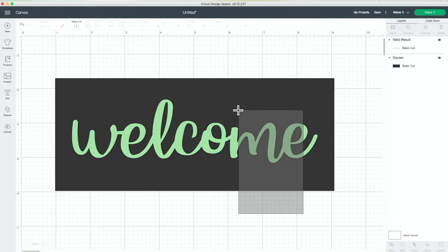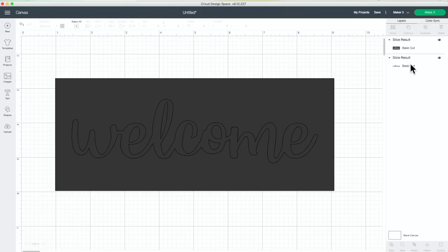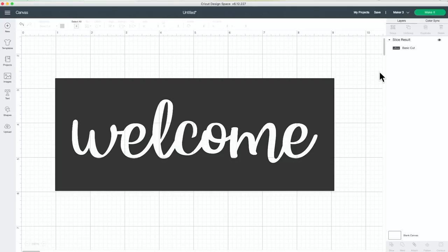And now this layer. So I'll select both of these layers just like this. I'm going to press slice. And then I'll delete the slice results that I don't need. So I don't need this anymore, and I don't need this. This is perfect.